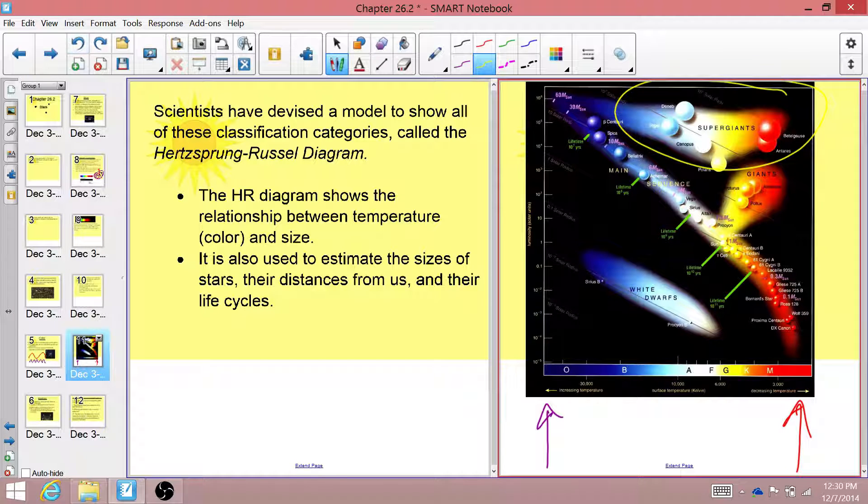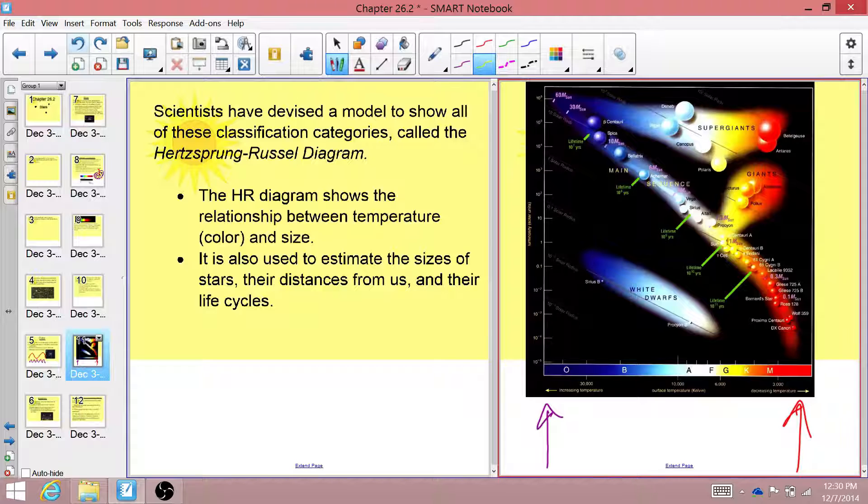Our sun is a main sequence star, which is really important because it's giving off the appropriate amount of light and heat to sustain life on Earth, which is, we're really lucky that our sun is a nice main sequence star.